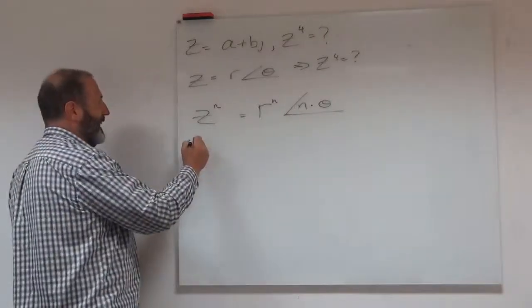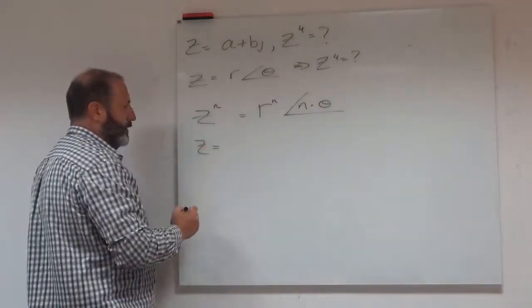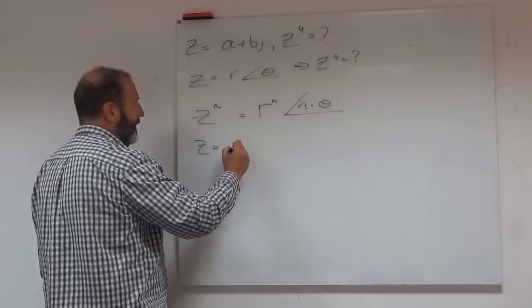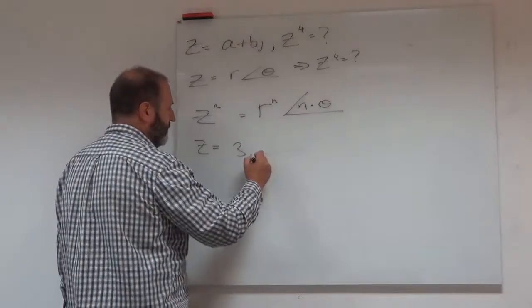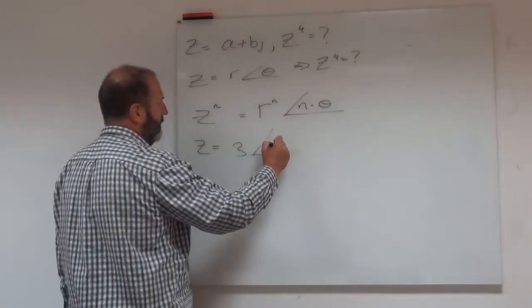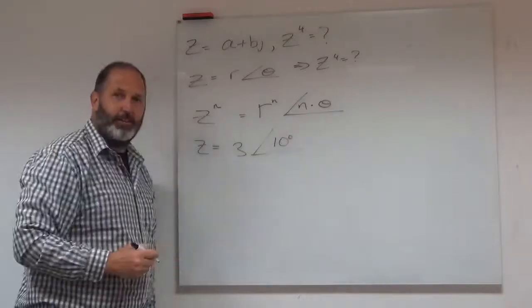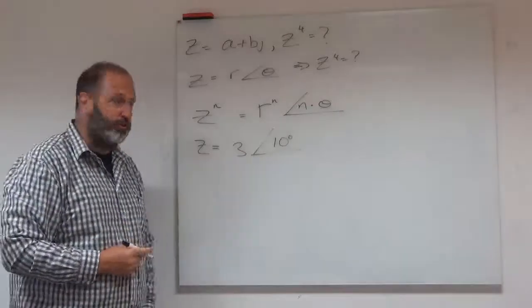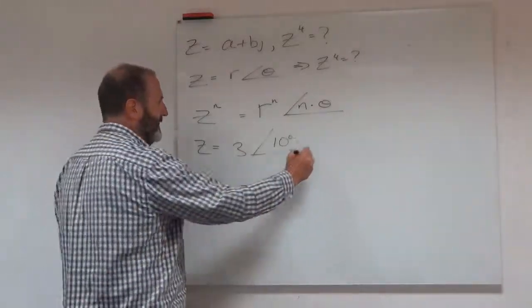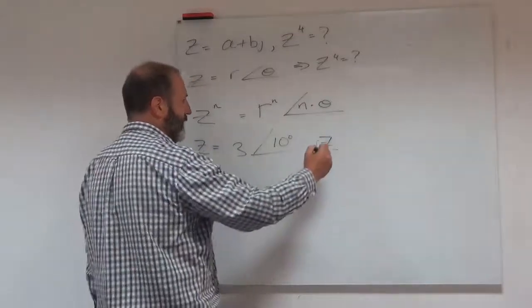Let's look at an example. Let's have z equal to, what shall we say, 3 and then 10 degrees. So I'll pick a nice value, but it holds true for all.